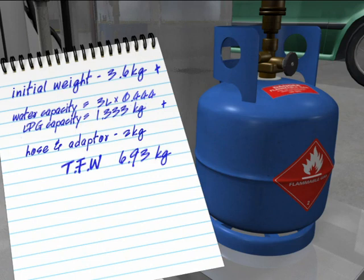Write down your target filled weight. Subtract the weight of the hose and adapter from your target weight. This is the maximum full weight.